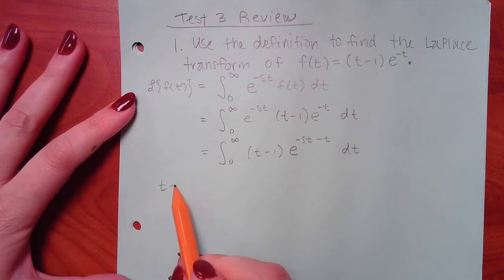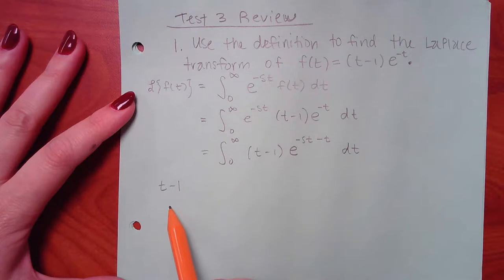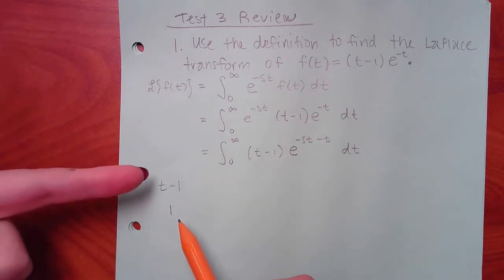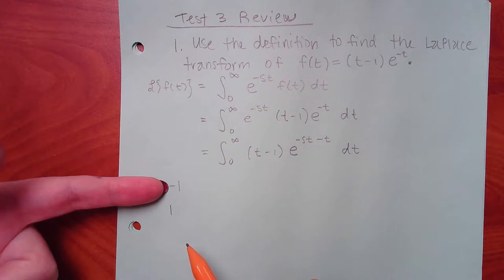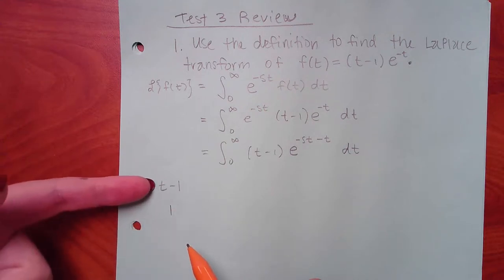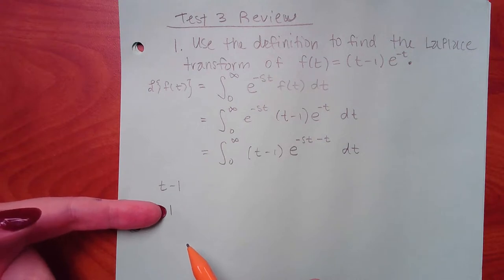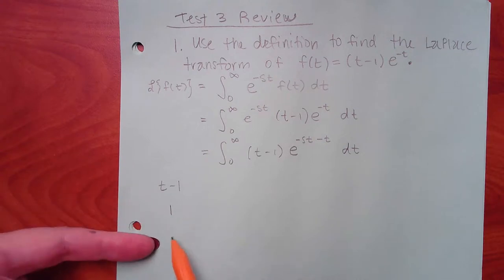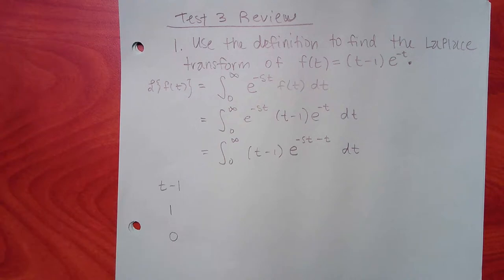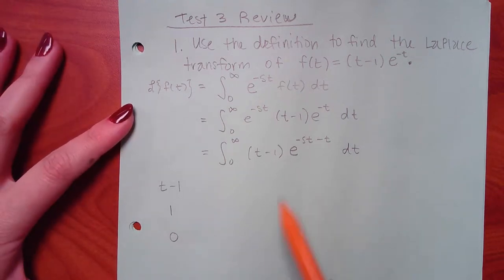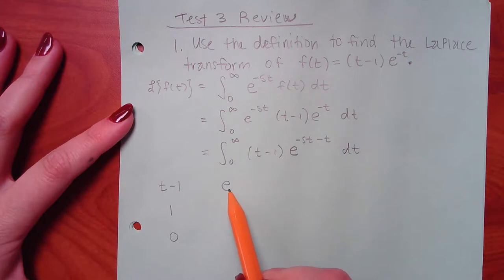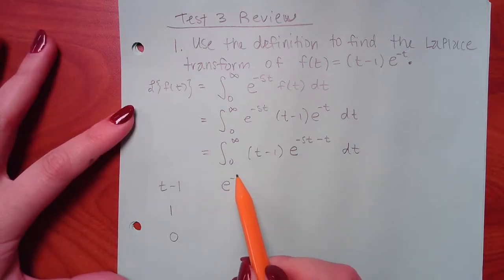I'm going to jump into the tabular method. I'll start with t minus 1 on one side. The derivative of t minus 1 is just 1. The derivative of 1 is 0. So the derivative side gives us 1, then 0. For the dv side, we have this e expression.